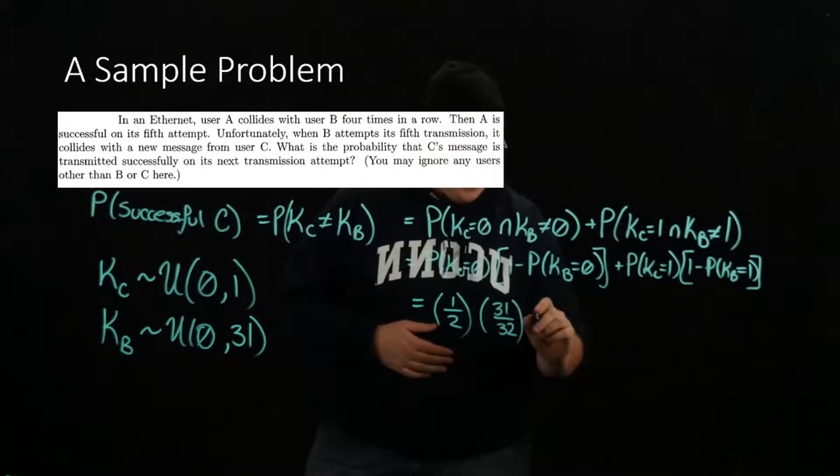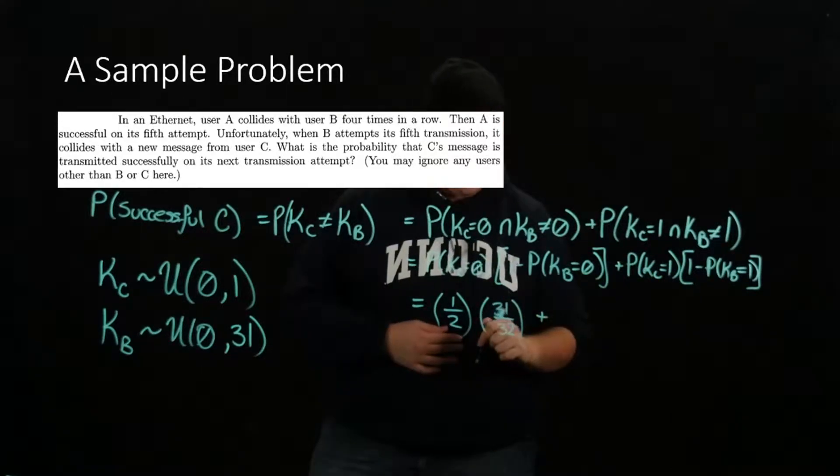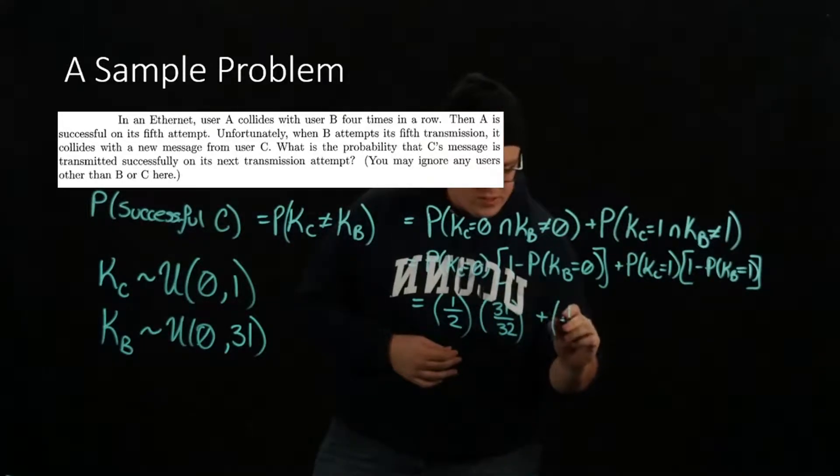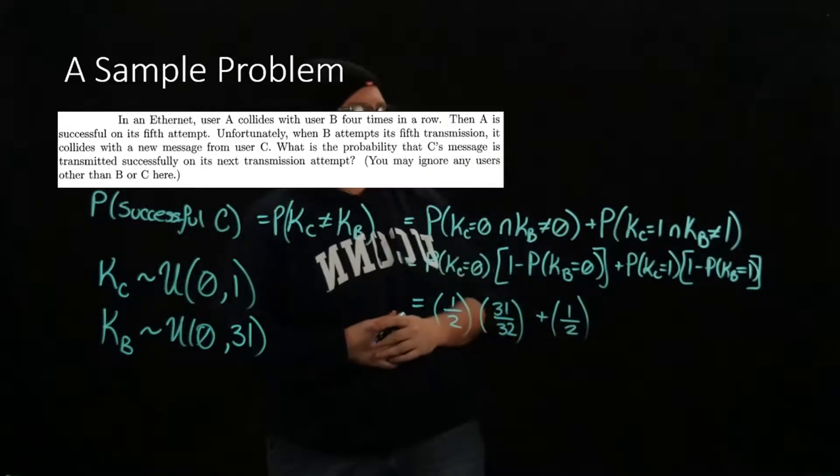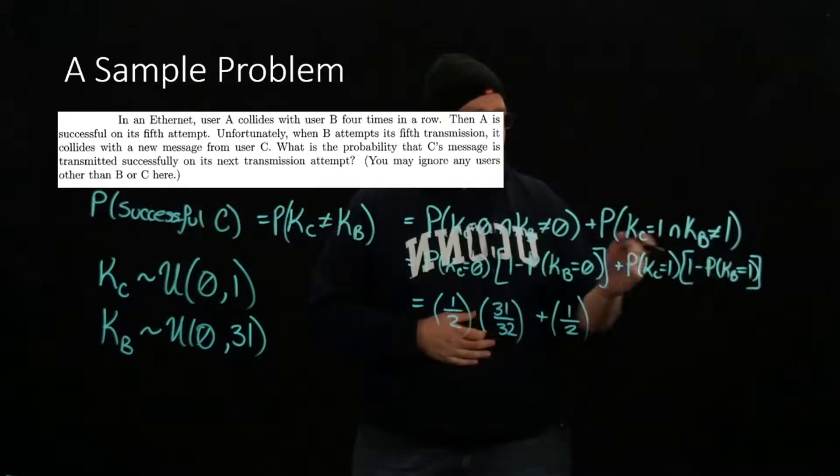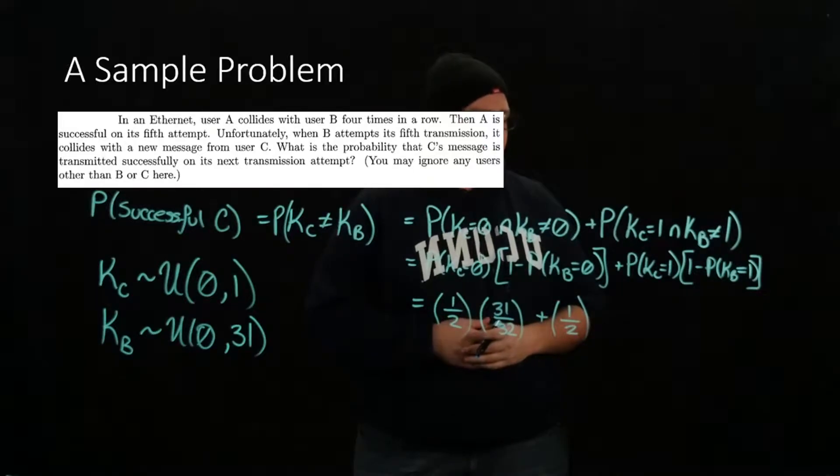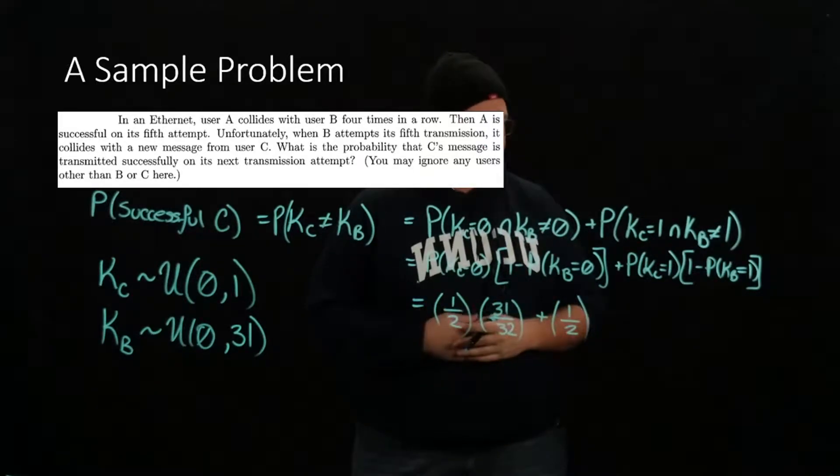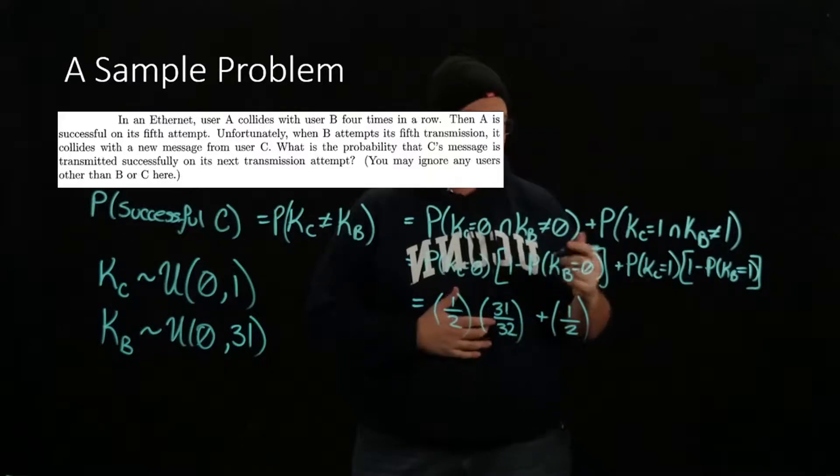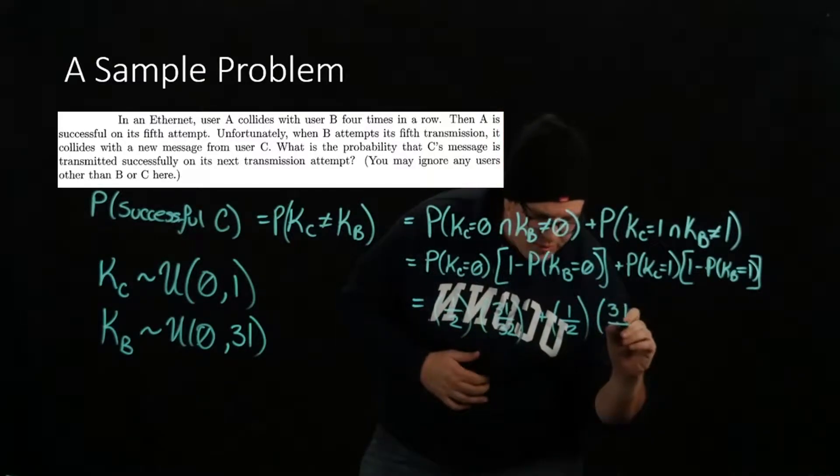Now the probability that KC equals 1, again it's a uniform distribution and there are two options, so the probability is 1 half. And again, this is uniformly distributed for the probability that KB equals 1, and there are 32 options, so it's 1 over 32, and 1 minus 1 over 32 is again 31 over 32.